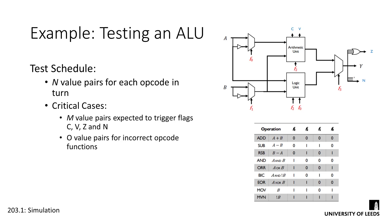Well, if our ALU is fairly small, say 8 bits or less, we could feasibly test all possible values. Testing every potential value pair for every possible opcode in an 8-bit version of this ALU would give us 1,048,576 different input combinations. Which sounds absolutely huge, but if it took just 10 milliseconds to test a single set of inputs, the whole test schedule could be done in 3 hours.